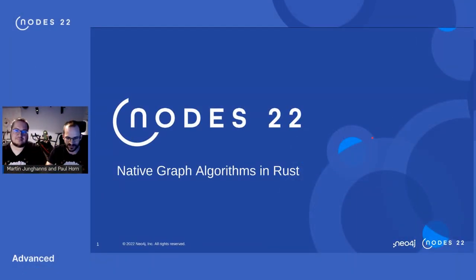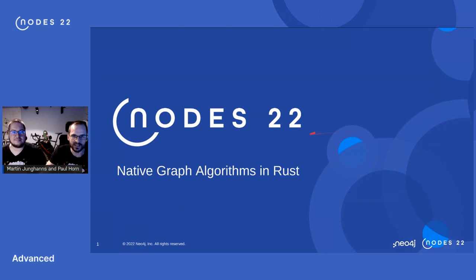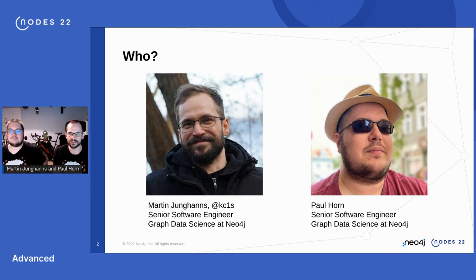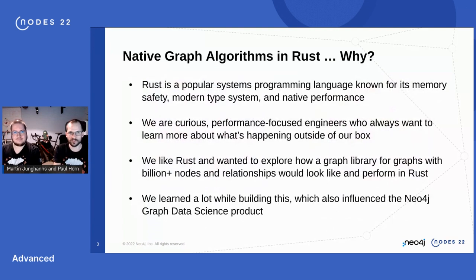Welcome everyone to the last talk in this track. Happy that you are still around. We will talk about native graph algorithms in Rust today. I am Martin, and I'm here with Paul, and we are both software engineers at Neo4j working in the Graph Data Science team.